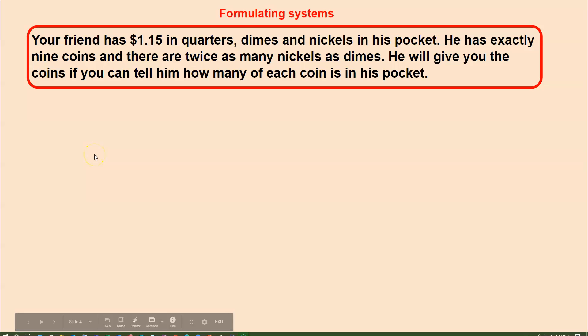Let's read the problem one more time. Your friend has $1.15 in quarters, dimes, and nickels in his pocket. He has exactly nine coins, and there are twice as many nickels as dimes. He will give you the coins if you can tell him how many of each coin is in his pocket.